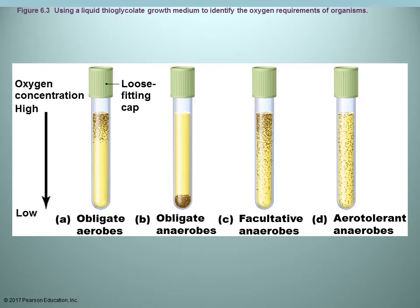You can get an idea of oxygen requirements by growing organisms in a test tube and looking at where the organism grows. If it only grows at the top along the surface, that suggests an obligate aerobe — it needs oxygen, which doesn't diffuse well through the media. If it only grows at the very bottom, it's an obligate anaerobe because higher oxygen levels would kill it. Facultative anaerobes prefer oxygen so growth is higher at the top but extends down. If growth is uniform throughout, it's aerotolerant — it can grow anywhere, regardless of oxygen.